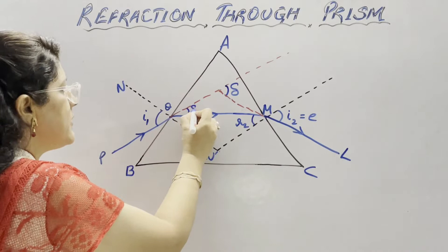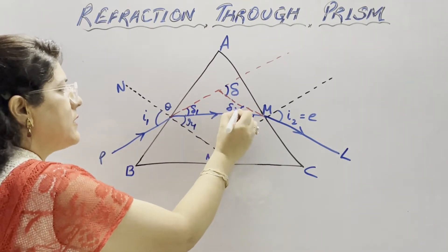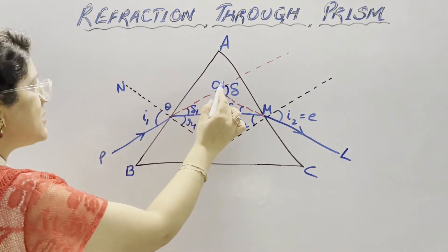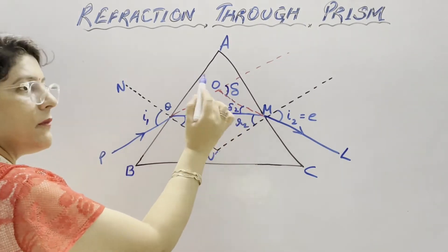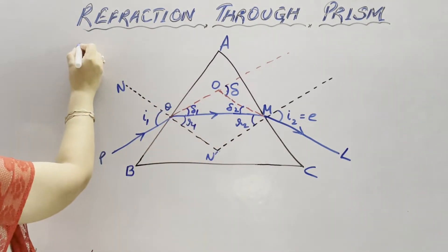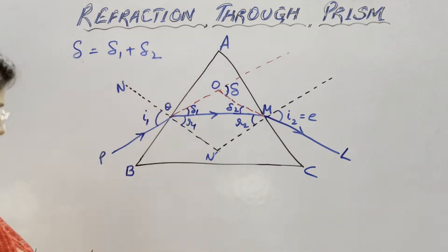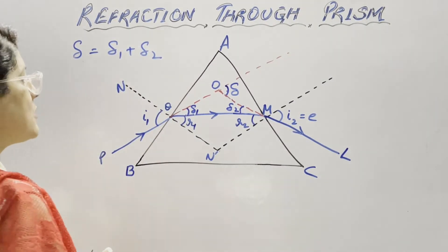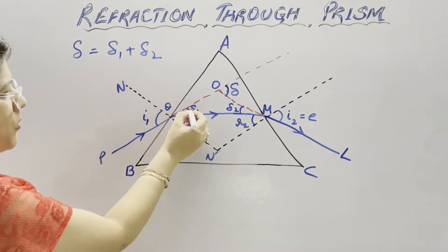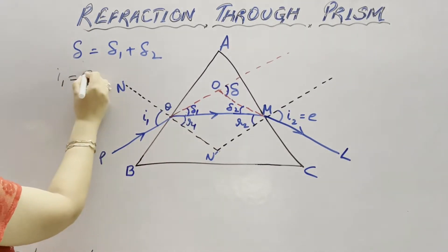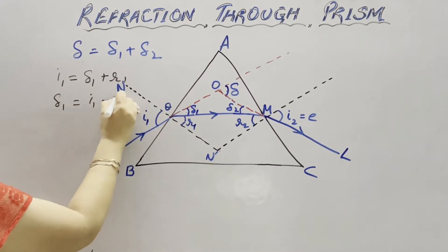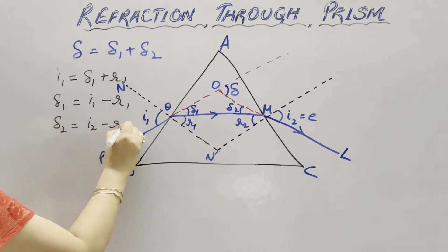At the first surface this is the first deviation delta1, and at the second surface this is the second deviation delta2. Considering triangle OQM, this delta is the exterior angle and we know that the exterior angle equals the sum of two interior opposite angles. So delta equals delta1 plus delta2. Now i1 equals delta1 plus R1, so delta1 equals i1 minus R1. Similarly, delta2 equals i2 minus R2.